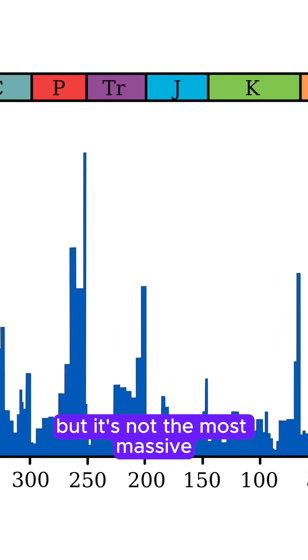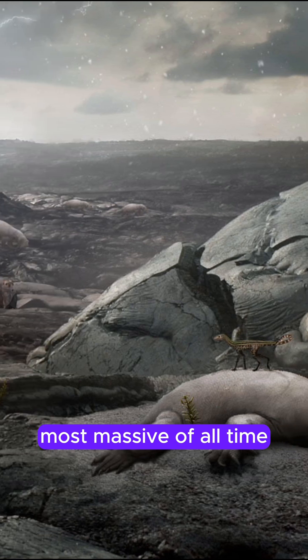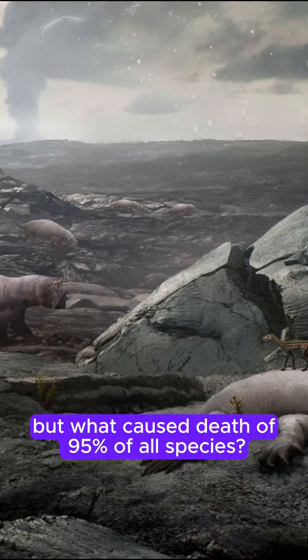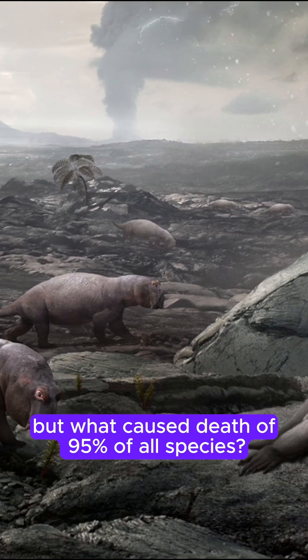But it's not the most massive. Here we can find the Late Permian extinction — the most massive of all time. But what caused the death of 95% of all species?